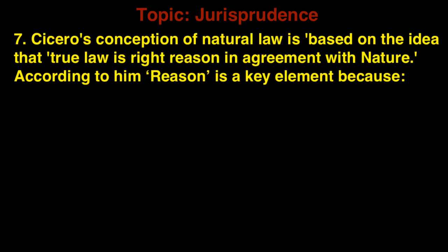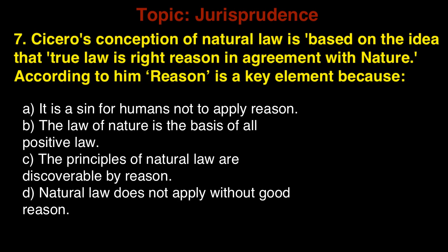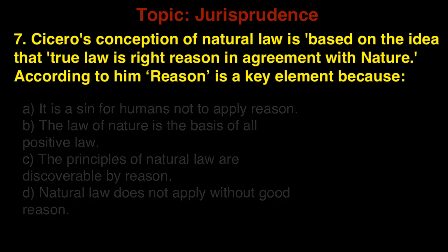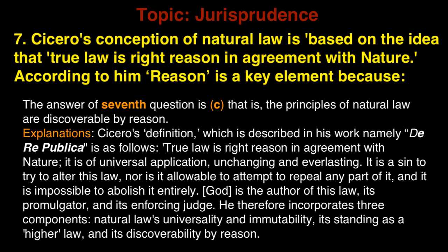Question 7: Cicero's conception of natural law is based on the idea that true law is right reason in agreement with nature. According to him, reason is a key element because: A. It is a sin for humans not to apply reason, B. The law of nature is the basis of all positive law, C. The principles of natural law are discoverable by reason, D. Natural law does not apply without good reason. The answer is C — the principles of natural law are discoverable by reason. Explanation: Cicero's definition in De Republica states: true law is right reason in agreement with nature; it is of universal application, unchanging and everlasting. He incorporates three components: natural law's universality and immutability, its standing as a higher law, and its discoverability by reason.